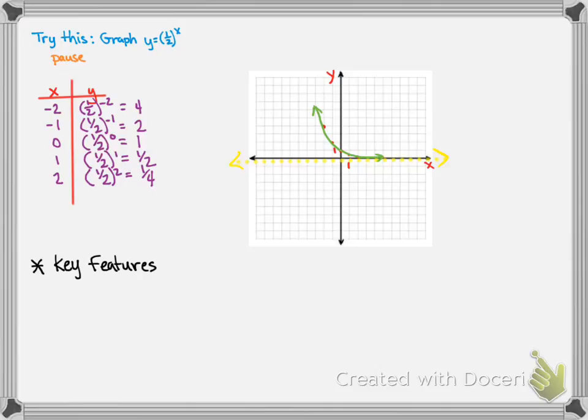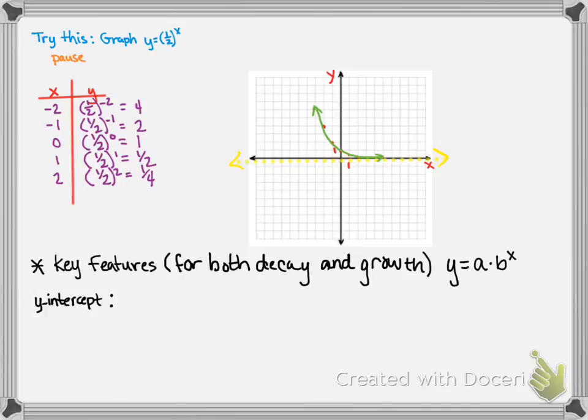Key features, and these are for both decay and growth functions, because this was a decay function. So, any exponential function of the form y equals a times b to the x. Or actually, let's look at the parent function. So, the parent function of y equals b to the x.